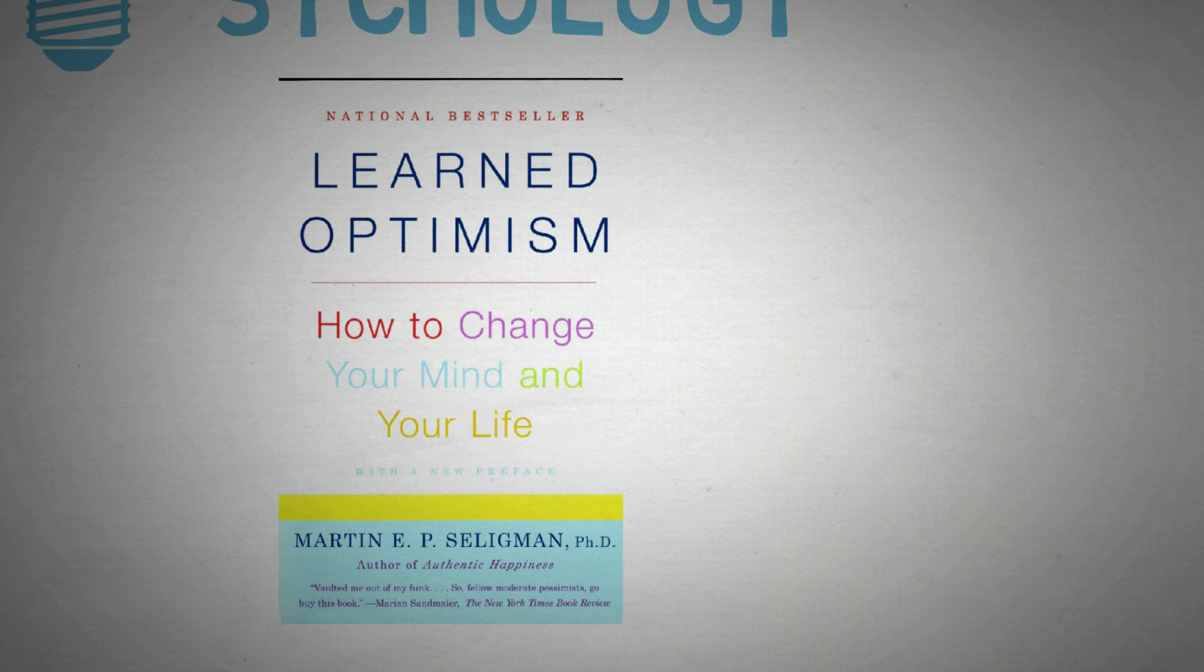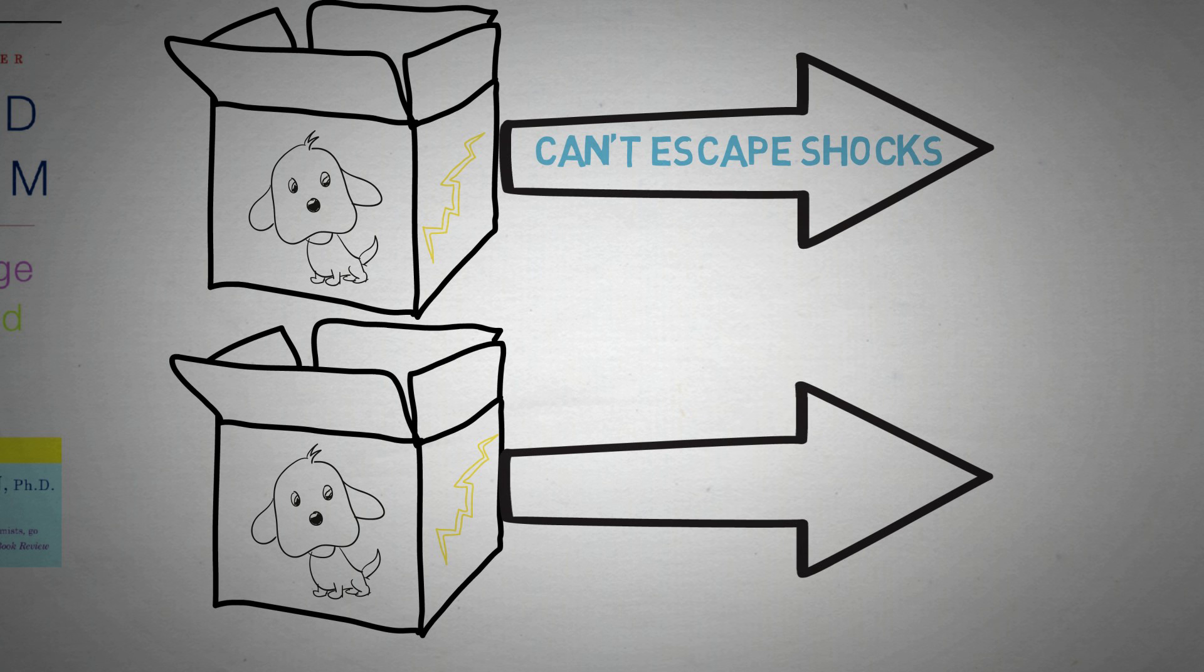Imagine two boxes. There is a dog in each box. These dogs get shocked randomly, but one dog can jump out of the box. The other dog is stuck in the box no matter what he does, he cannot get out of the box.